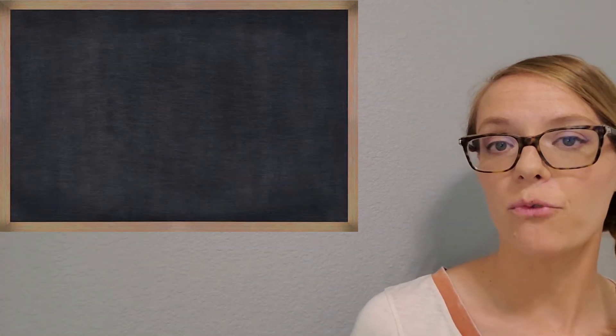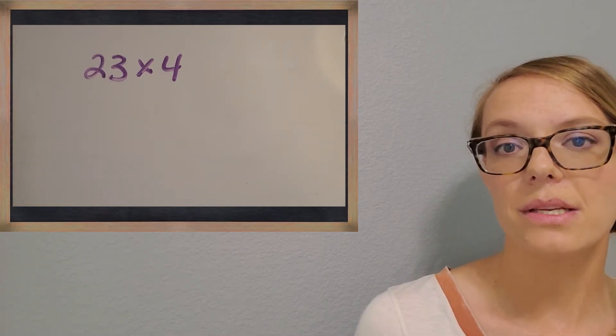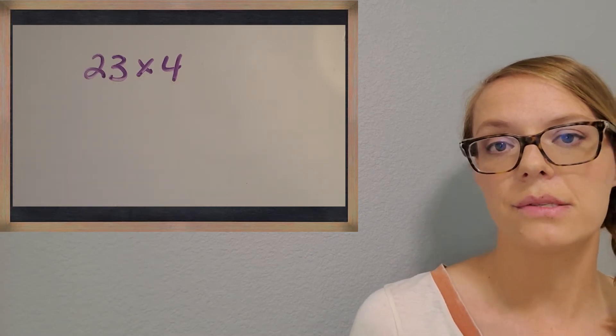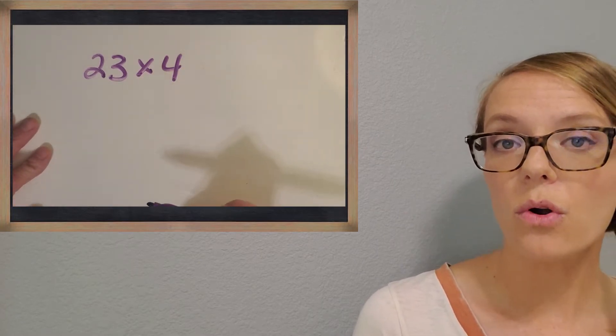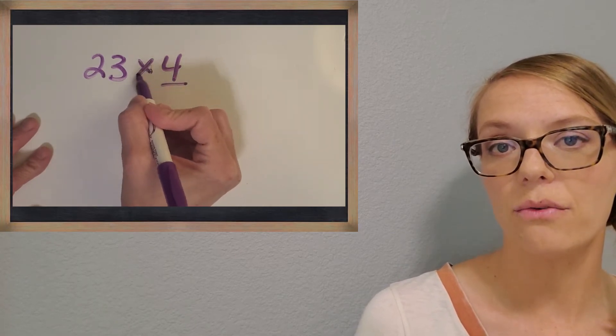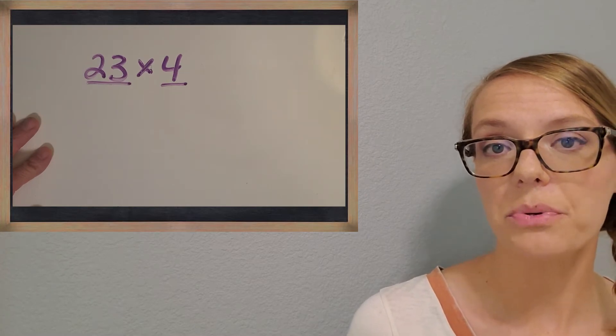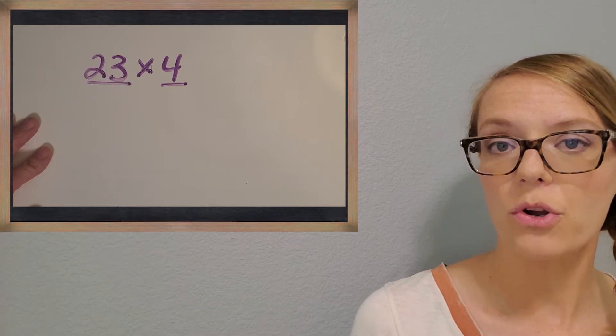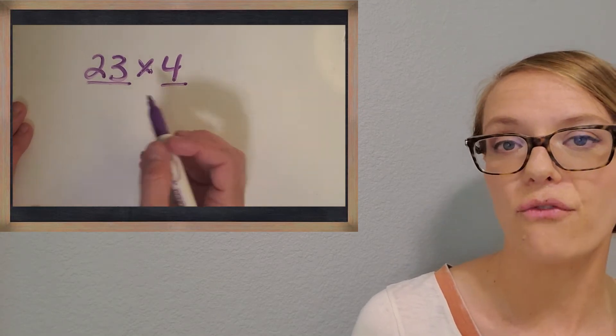Here's a larger problem for us. It's a two-digit number times a one-digit number. So this one says 23 times four, but what I like to think about is that it could be 23 groups of four, or we could say it the opposite way, four groups of 23. That would actually be the easier way to draw it. So let's practice with drawing some of these problems. If it's four groups, how many circles should I draw?